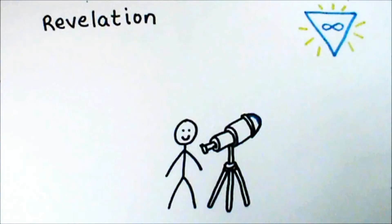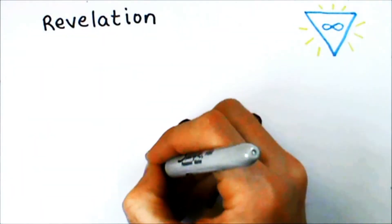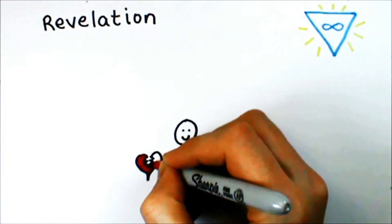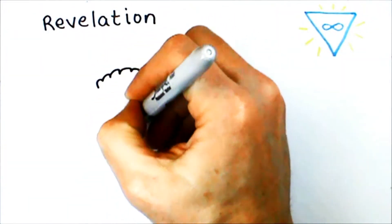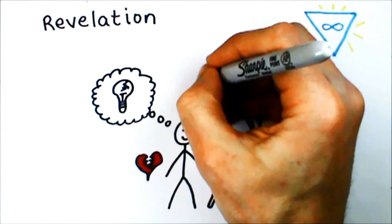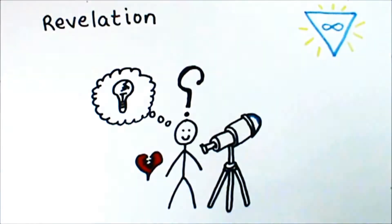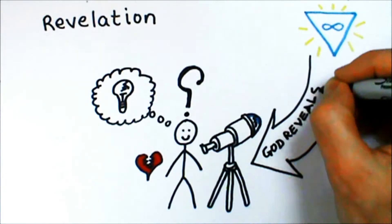In the Christian faith, this is especially important because the problem is not just that God is infinite and we're finite, the problem is that humans are fallen. Our reason and imagination and intellect, all the things we'd use to understand God, are distorted by selfishness and fear and pride. It's like we're trying to get a clear picture of God by looking through a cracked telescope. Because of this, Christian theologians make a careful distinction between two kinds of revelation.